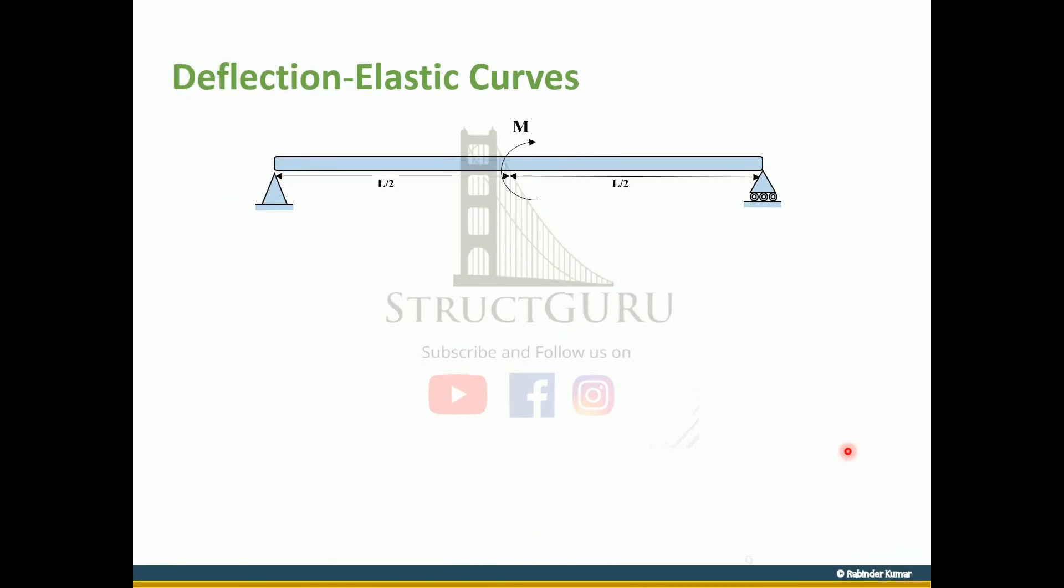Here is another example: a beam subjected to an internal moment. First, compute the reactions and develop bending moment diagram. Again, this is negative bending moment, and this is positive bending moment. For this case, the elastic curve will be drawn in this manner.